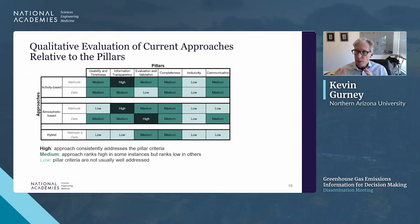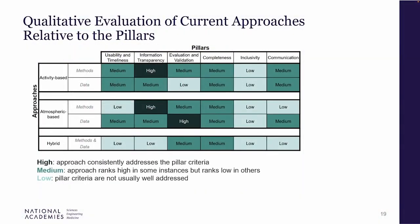Using this framework to evaluate the three broad approaches — activity-based, atmospheric, and hybrid — the committee broke each into methods and data and scored them low, medium, or high across the six pillars. The key insight is that these approaches have complementary strengths and weaknesses: one approach's weakness can be another's strength, suggesting that integrating more approaches will overcome individual weaknesses.